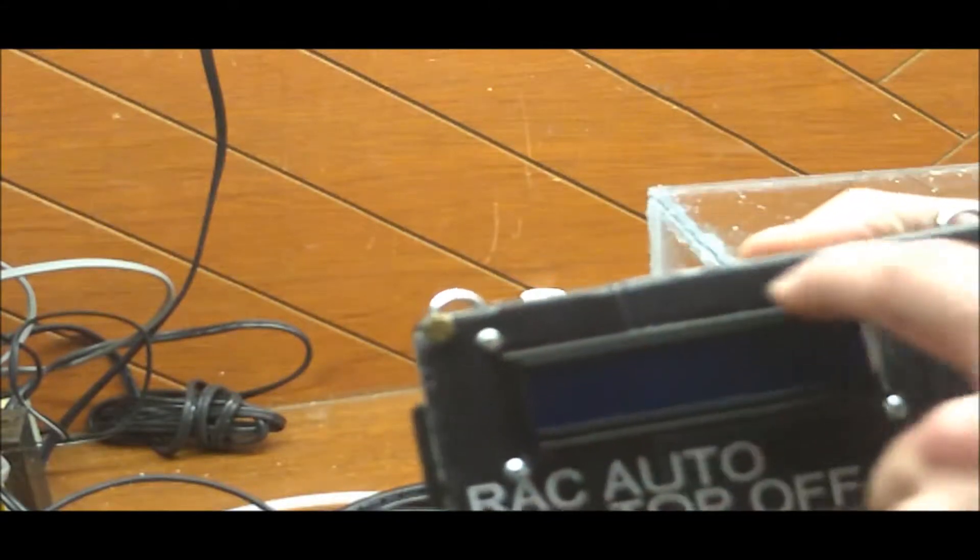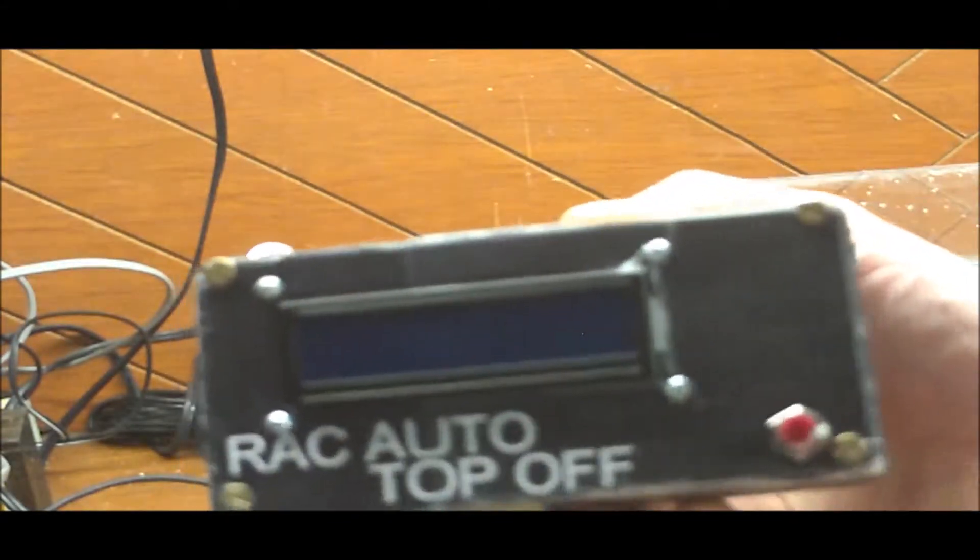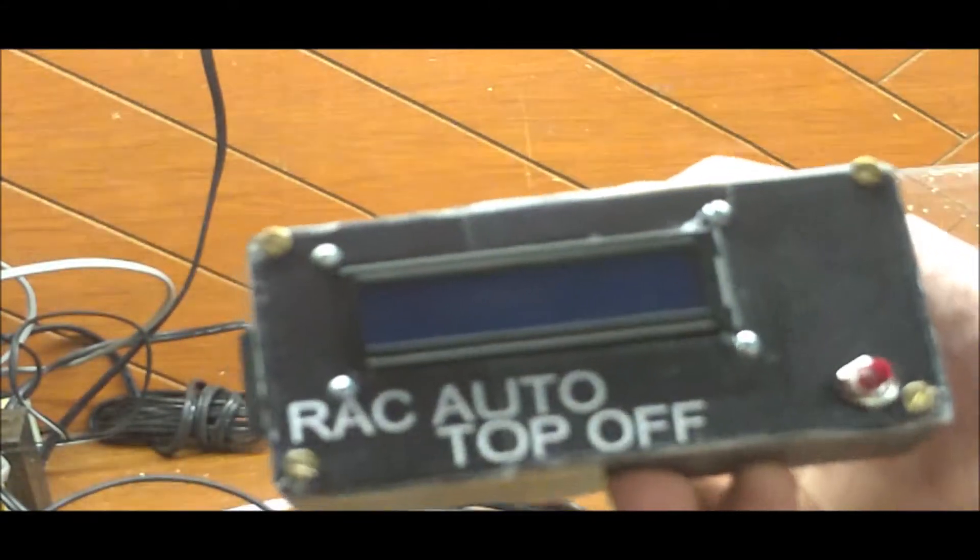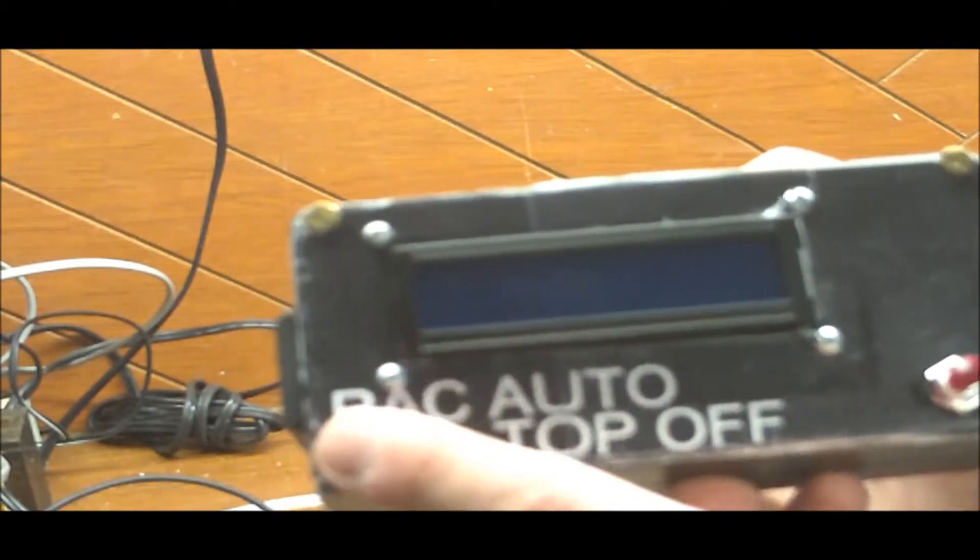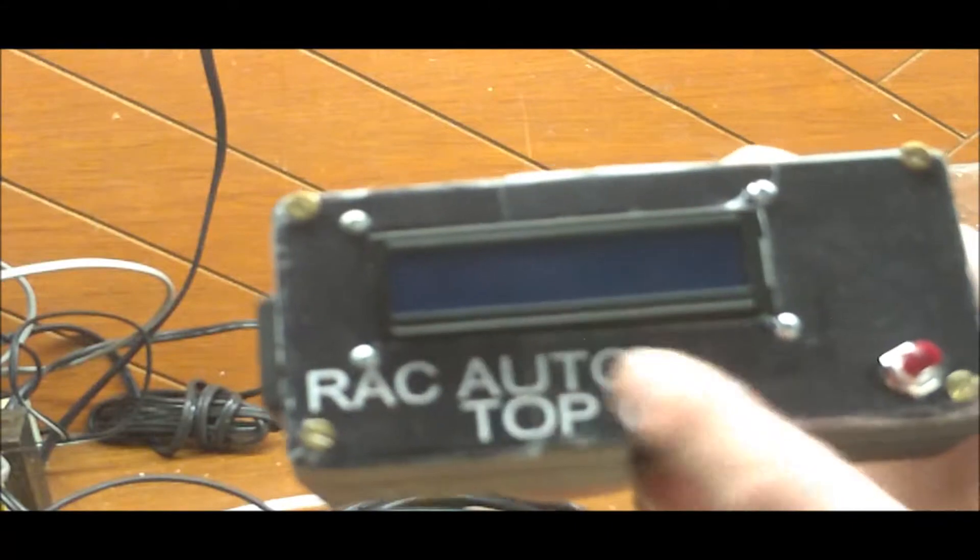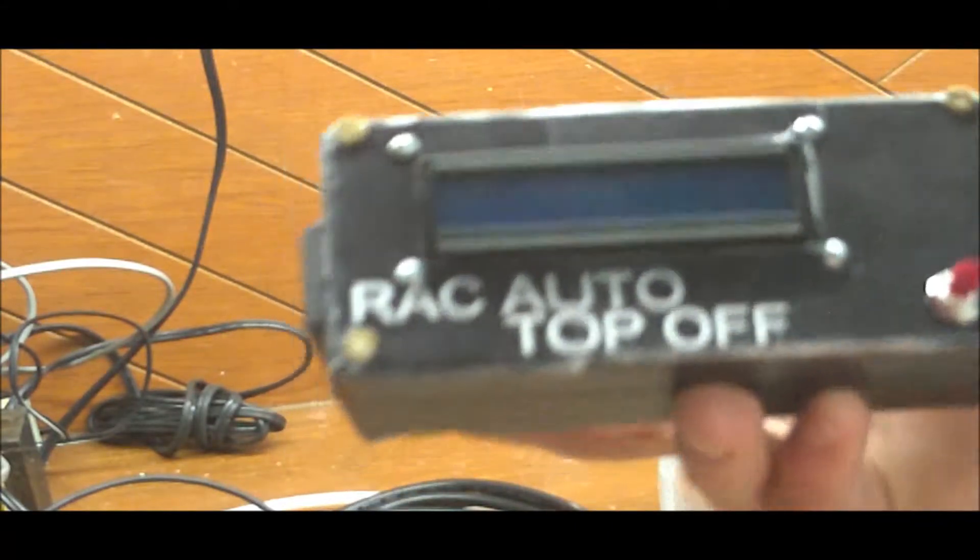And this is just a label I made up to try to hide some of this ugly, you know, my cut marks. That's the first time I've ever done a label, so I'm working on it. And I call it RAC, which stands for Rex Aquarium Computer, Auto Top Off, and that's it.